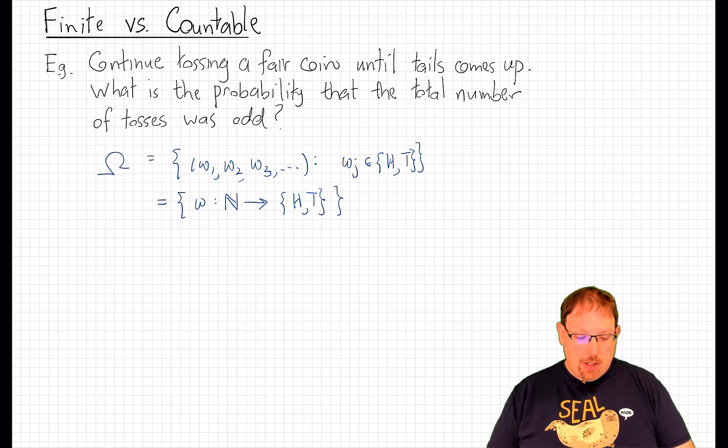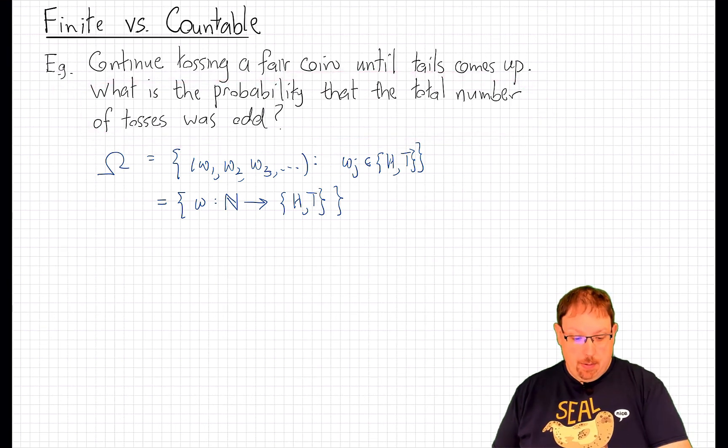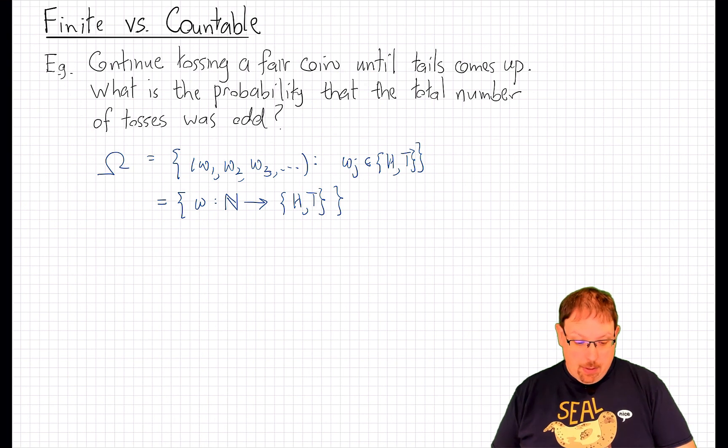And now how do we describe the event that we're interested in calculating the probability of right here? Well, we can write it exactly the way I just said it out loud, which is to say that that event is a union.